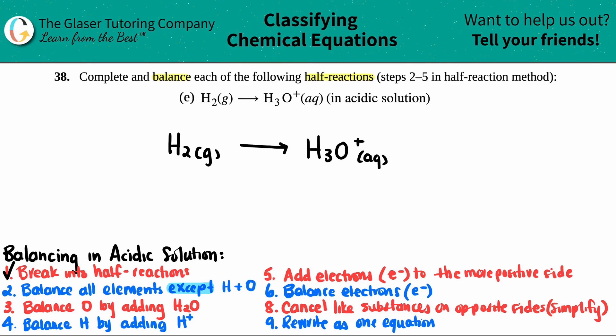So the second step is you want to balance all elements except for hydrogen and except for oxygen. So let's see. Do I have any other elements beside H and O? No. I only see H's on both sides and I see oxygen only on one side, my product side. So I can't do the second step. I don't have any other elements beside H and O. So that goes out the window. But I just check just to make sure, and if I notice I can't do it, I just skip over it.